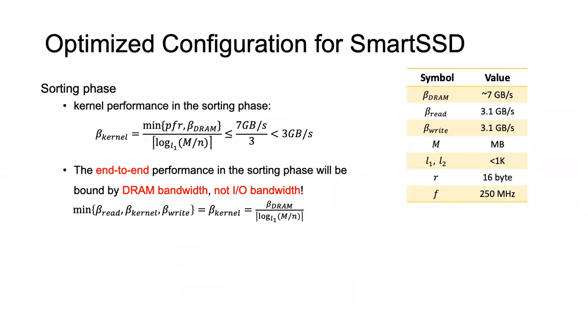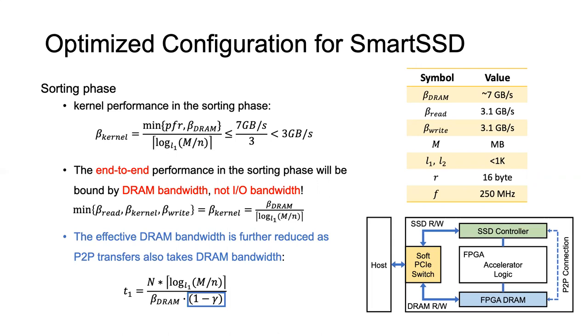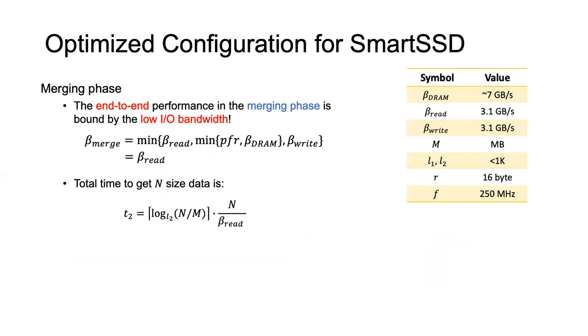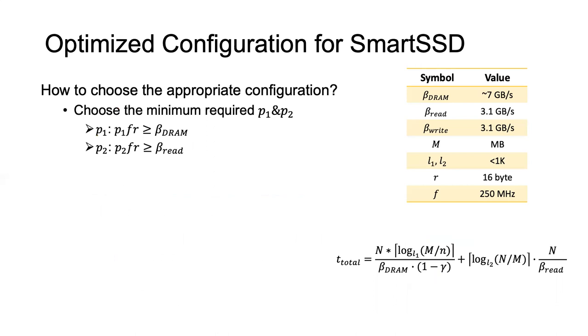Now let's take a look at the optimized configuration for Smart SSD. We can see that Smart SSD has an actual DRAM bandwidth of only around 7 gigabytes per second. Since the actual tree leaf number is very limited, it usually takes more than two passes to sort megabyte-scale data. As a result, the kernel performance in the sorting phase is actually less than the I/O bandwidth. So the end-to-end performance in this phase is bounded by the DRAM bandwidth, not the slow I/O. What makes things even worse is that the effective DRAM bandwidth available to the kernel is further reduced because these P2P transfers also consume the DRAM bandwidth. The merging phase is a bit simpler. We can easily derive that the bottleneck is from the low I/O bandwidth.